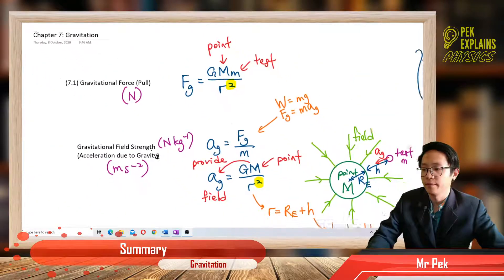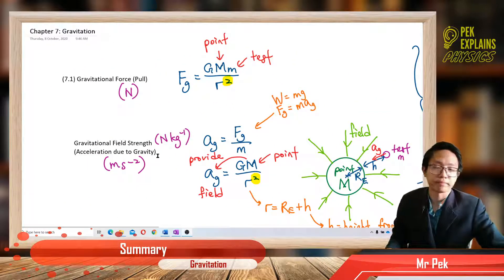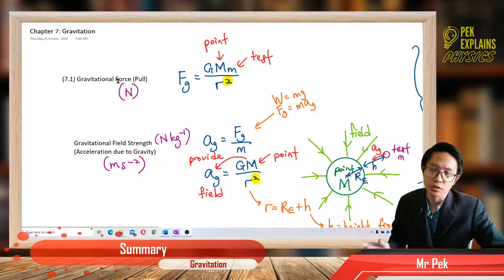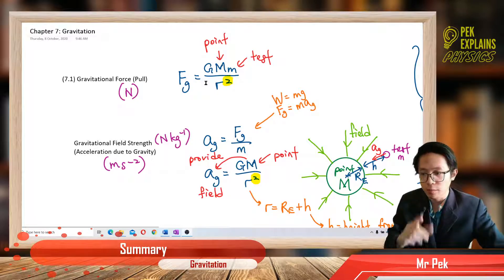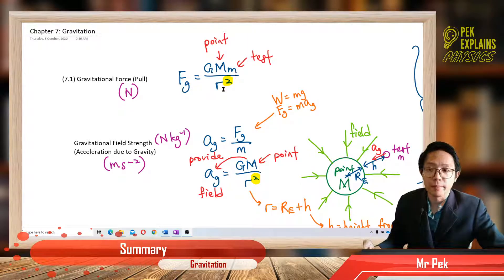Now let us start with gravitational force. Sometimes you call it gravitational pull. Gravitational force or gravitational pull — they mean the same thing. The formula is Fg equal to GMm over r squared.